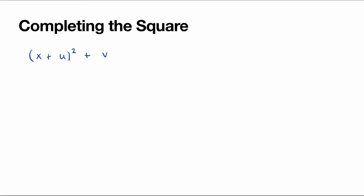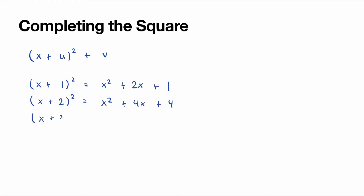As a quick reminder, the first three perfect squares are: (x + 1)², which is x² + 2x + 1. The next one is (x + 2)², which is x² + 4x + 4. And finally, (x + 3)², which is x² + 6x + 9.